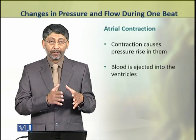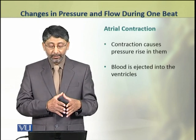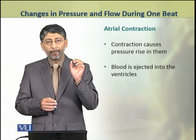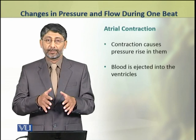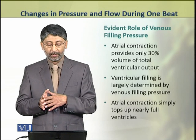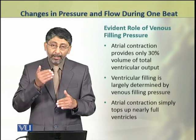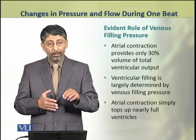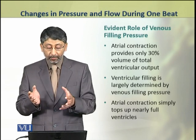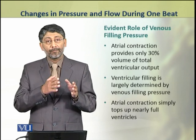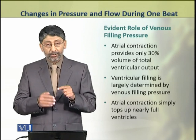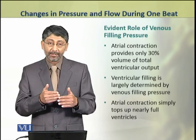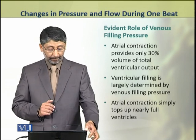The next phase is atrial contraction. When the atria contract, pressure rises in them, and as a result blood is ejected into the ventricles. Dear students, atrial contraction provides only 30% of the total ventricular volume. The rest of the 70% is filled by venous filling pressure during diastole. So atrial contraction simply tops up the nearly full ventricles — 70% is filled by venous pressure, and the remaining 30% is filled by atrial contraction.